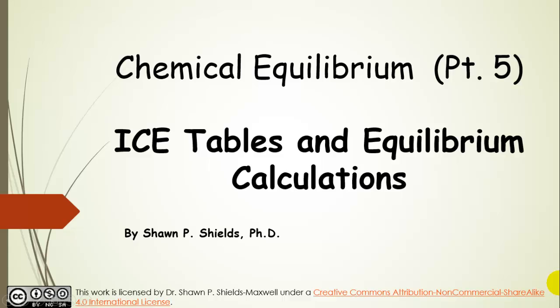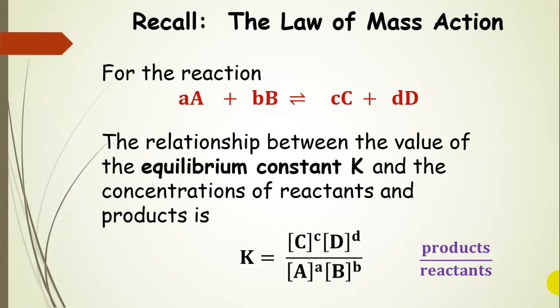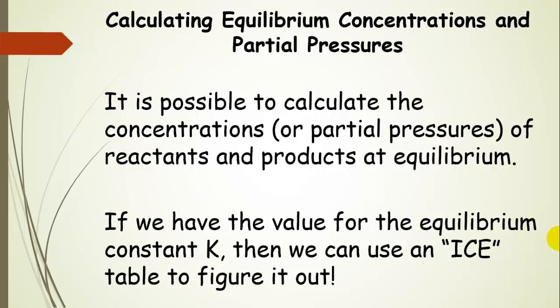Chemical Equilibrium, Part 5: ICE Tables and Equilibrium Calculations. Before we get started, let's remind ourselves of the law of mass action. We have our generalized reaction and the equilibrium constant expression related to the concentrations of products and reactants. It's possible to calculate the concentrations or partial pressures of reactants and products at equilibrium.